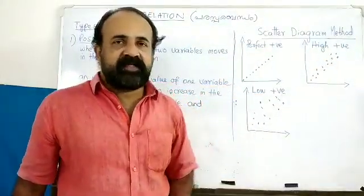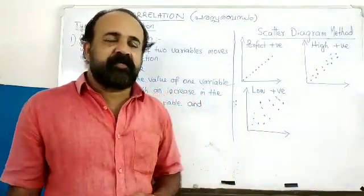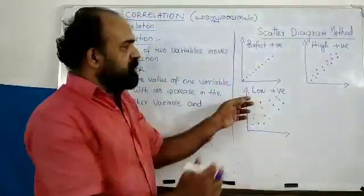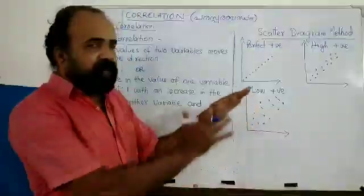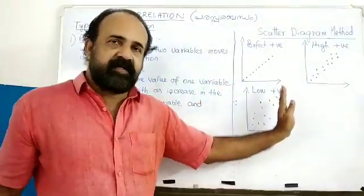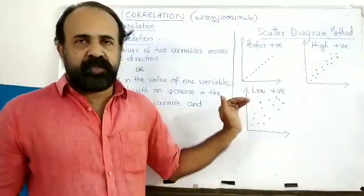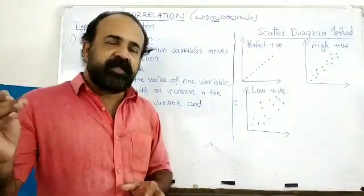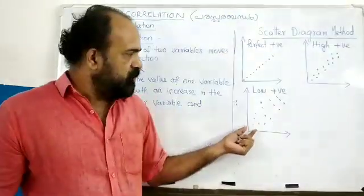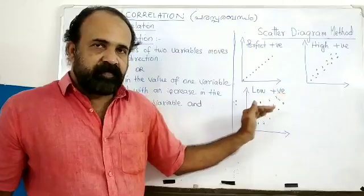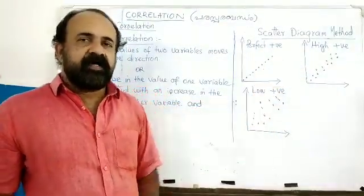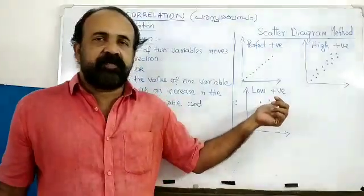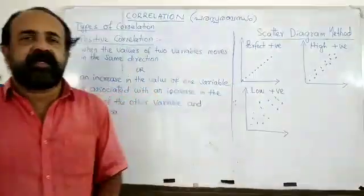When the points are near but not exactly on the straight line, we have a high positive correlation — the two variables x and y are very highly correlated. When the scatter is wider but still in the same direction, we call it low positive correlation.